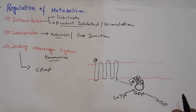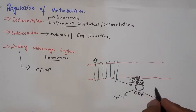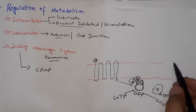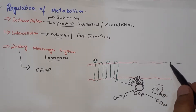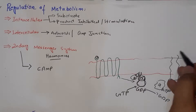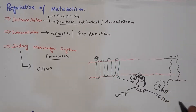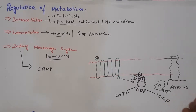When the alpha subunit releases GDP and binds to GTP, it dissociates from the beta and gamma subunits and moves to activate the enzyme adenylyl cyclase, which lies in the membrane. This enzyme, adenylyl cyclase, gets activated by the alpha subunit and catalyzes the conversion of ATP into cyclic AMP.